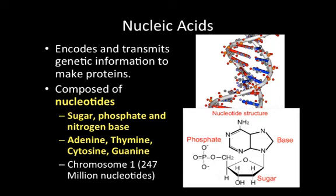DNA includes the nitrogen bases adenine, thymine, cytosine, and guanine (A, T, C, G). To illustrate the complexity, chromosome number one — the first of our 46 chromosomes — has over 247 million nucleotides. That's an extremely large number for such a small molecule, but it reflects the complexity and uniqueness of the genetic code, which provides enormous amounts of information for the cell to produce proteins.